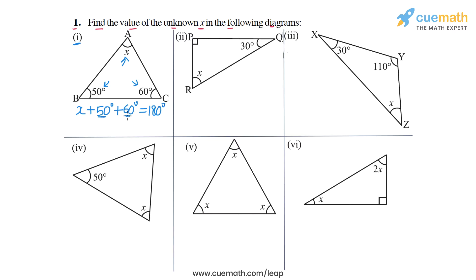50 degrees plus 60 degrees is equal to 110 degrees. So from here we can write x will be equal to 180 degrees minus 110 degrees, which is equal to 70 degrees. So 70 degrees is the answer for part 1.